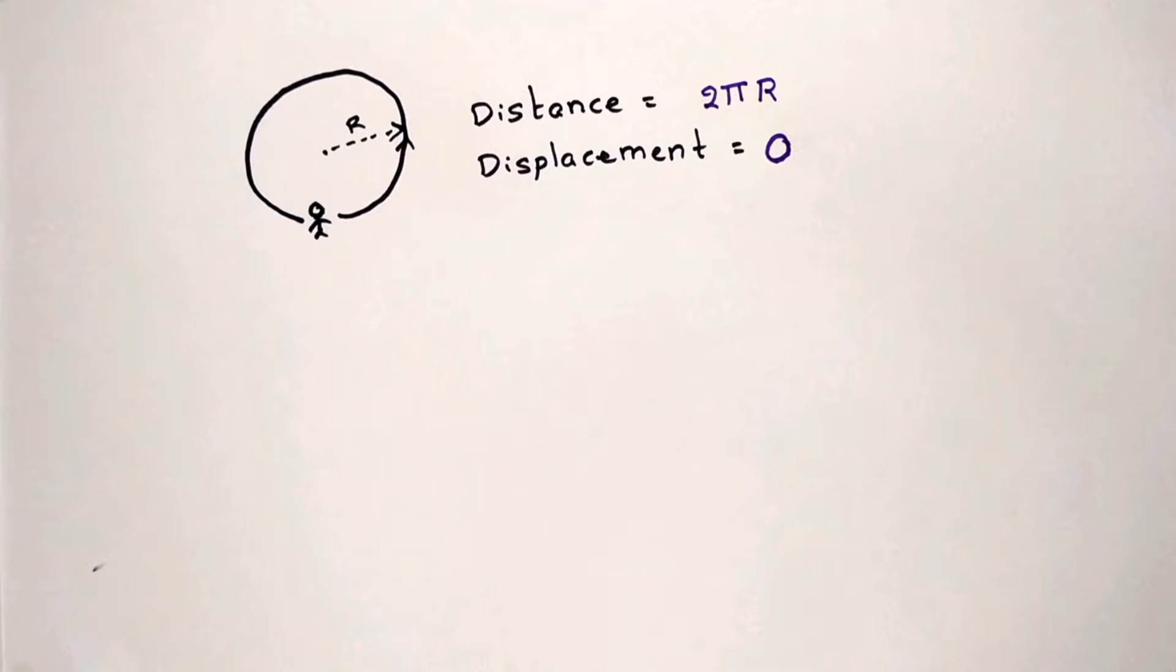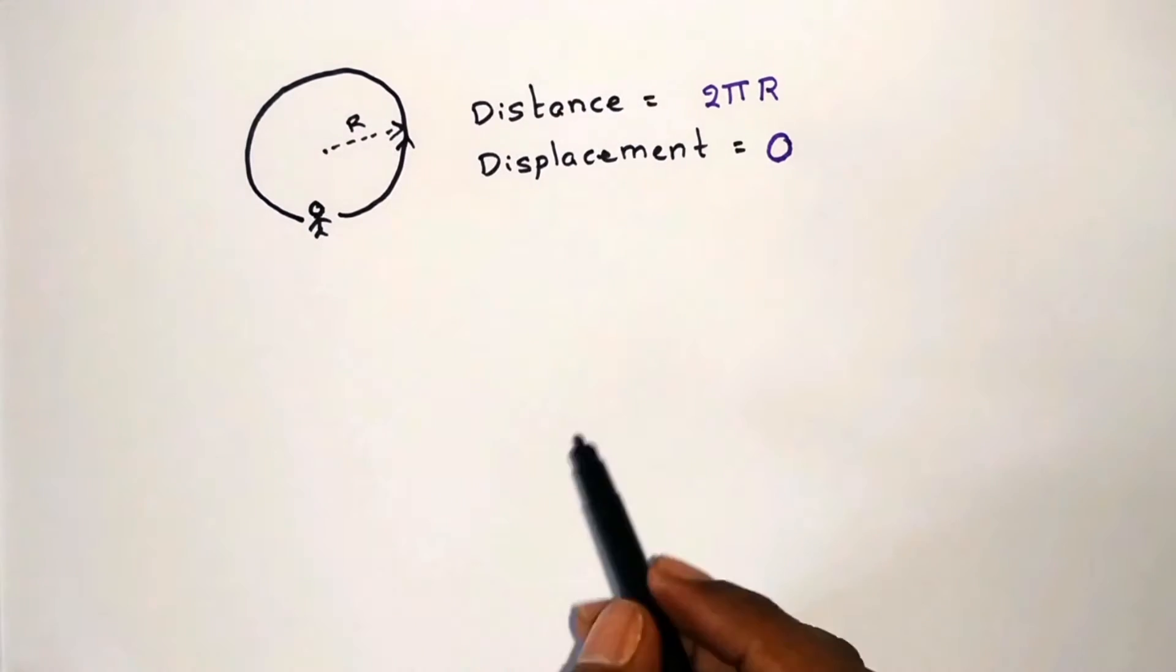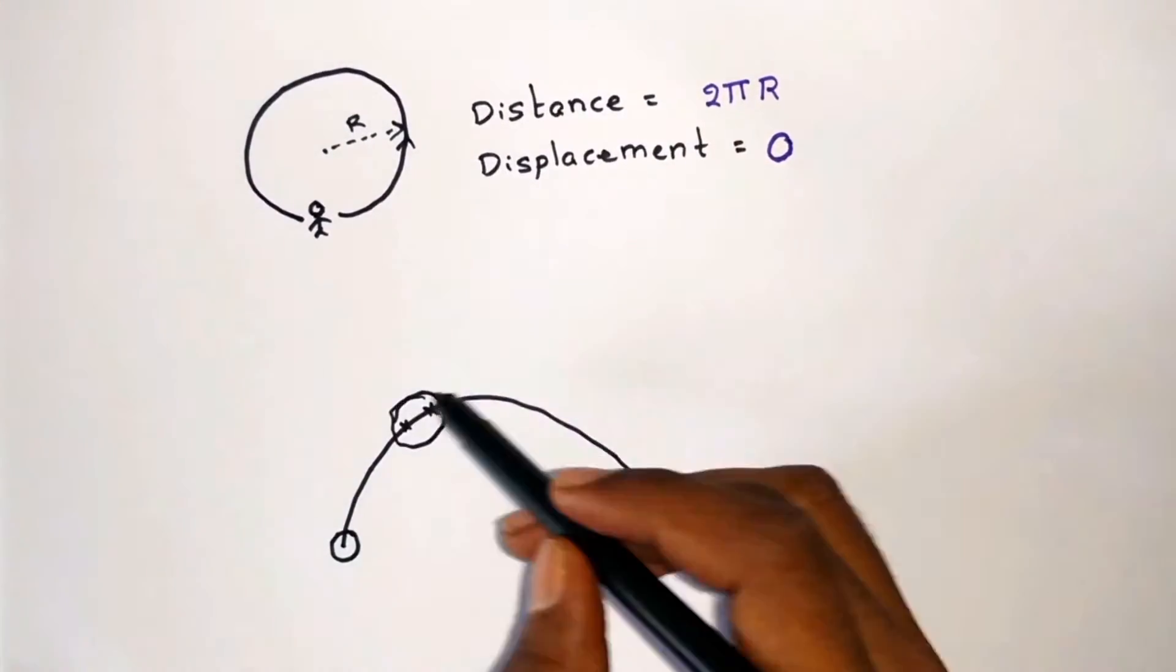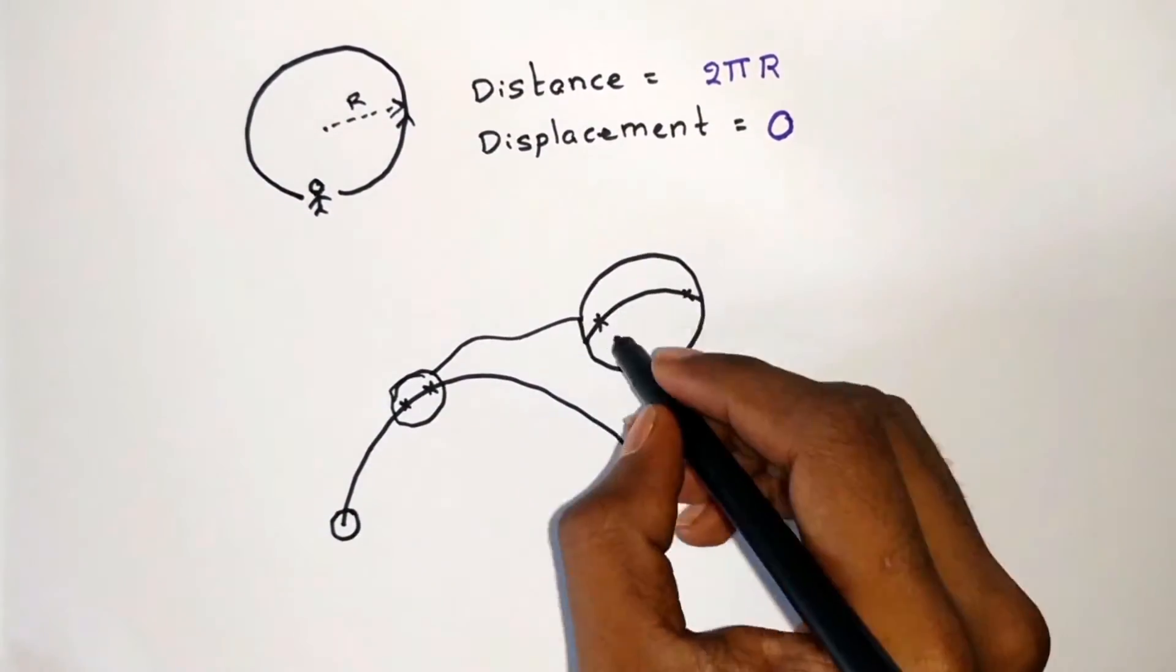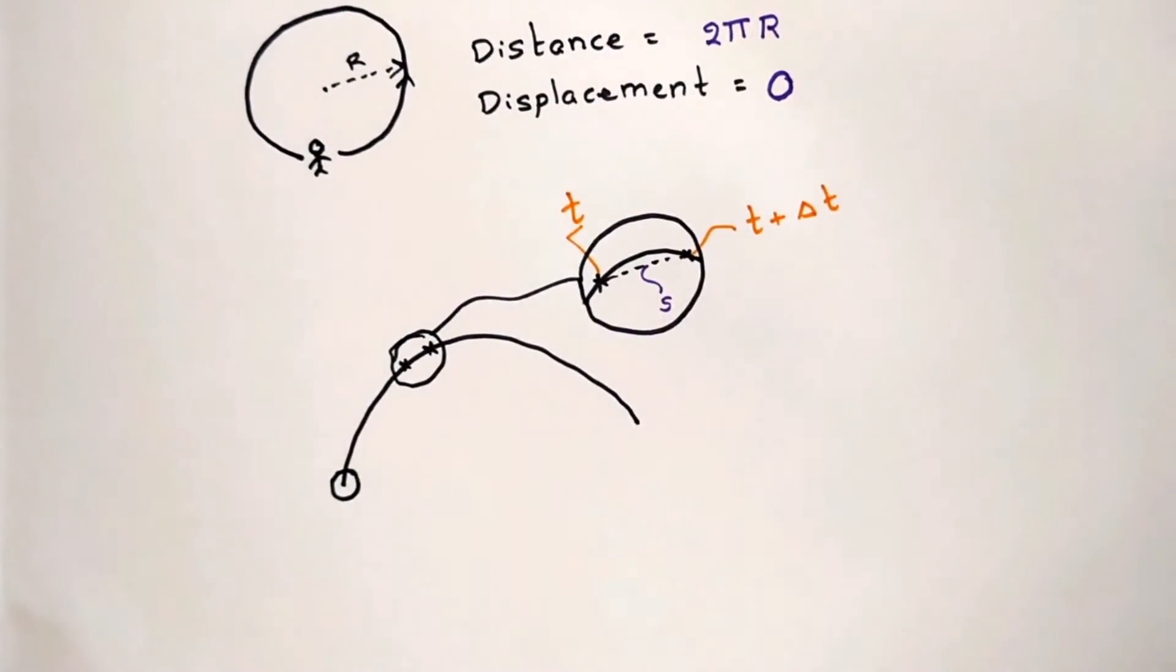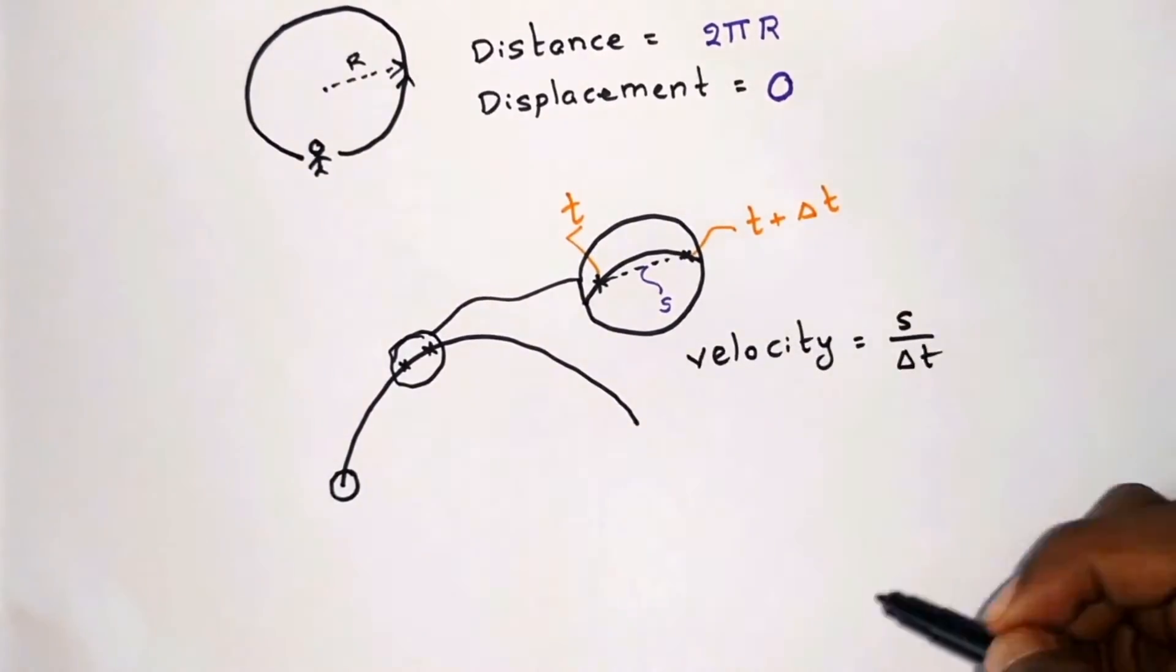In the previous case, we considered the velocity in a small duration of time, that is one second. But if you want the velocity at a particular instant of time, then we need to express the velocity in differential form. Consider the motion of the ball between a very small duration of time, which is delta t. In this time, the displacement is delta s, so the velocity is given by delta s by delta t.